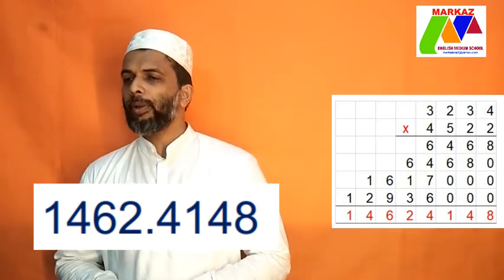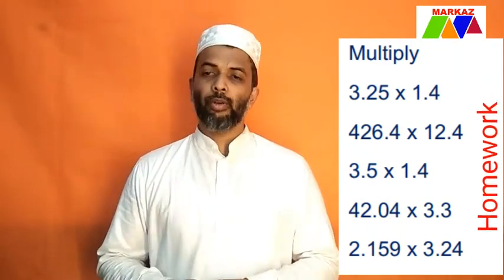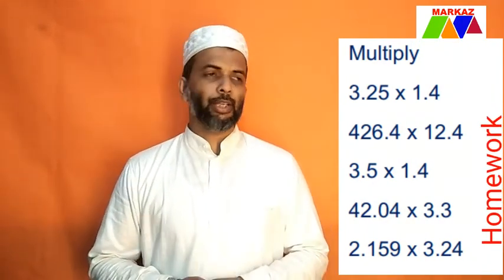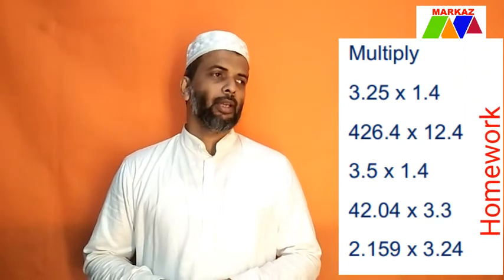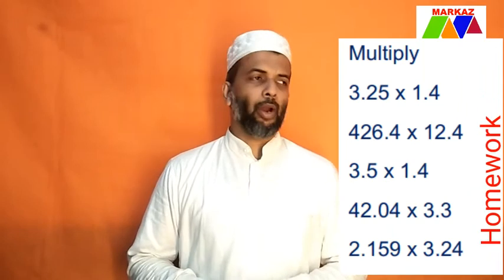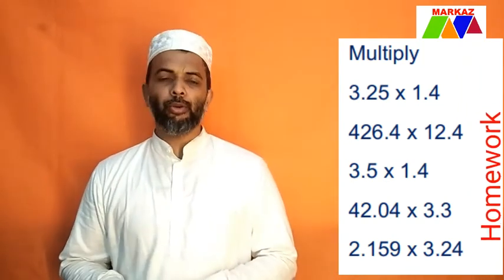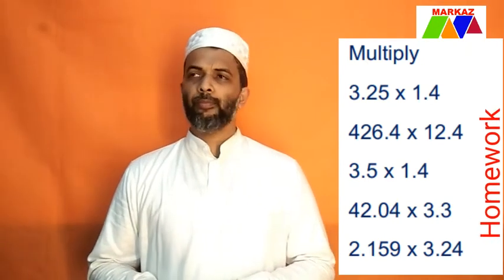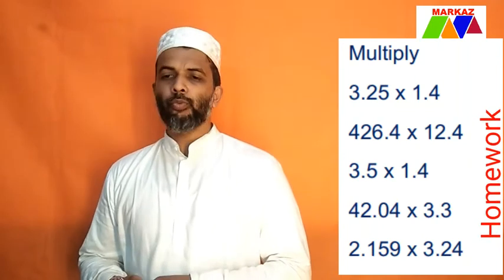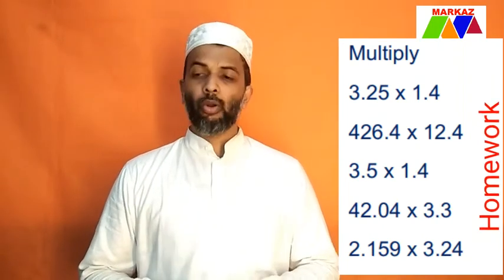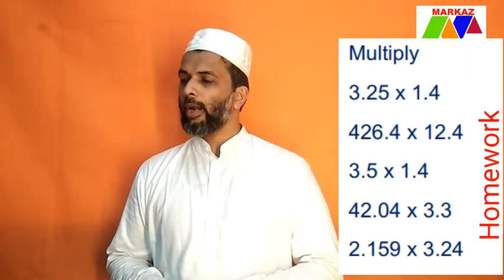Write down these questions for homework. Multiply 3.25 into 1.4, 426.4 into 12.4, 3.5 into 1.4, 42.04 into 3.3, 2.159 into 3.24. These are your homework. Find the product and send me your answers.